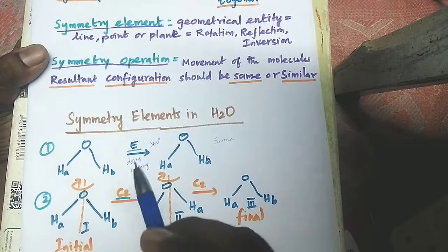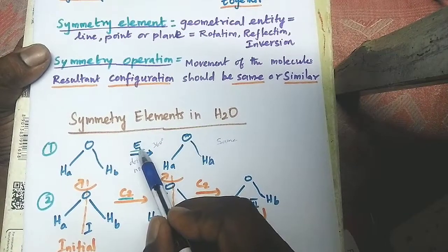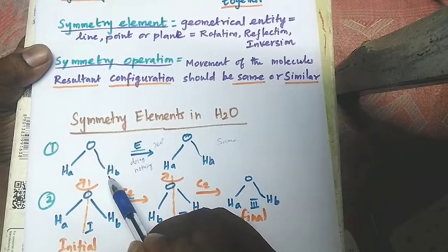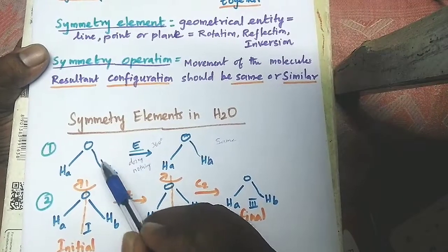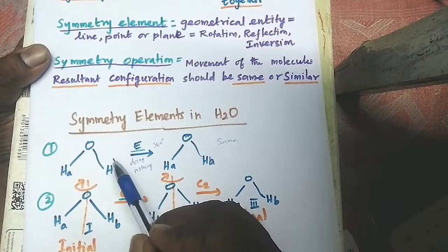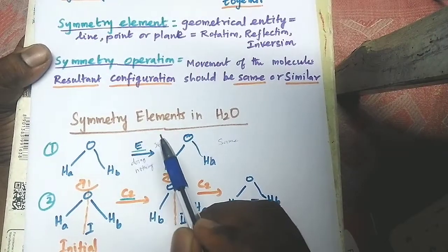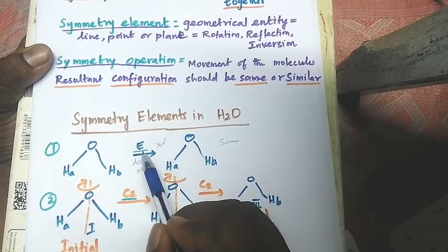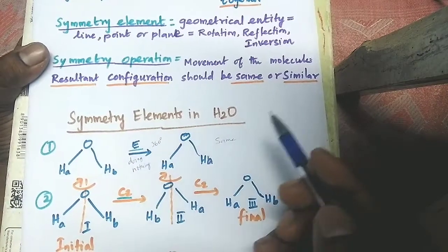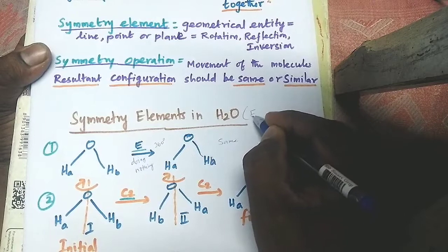We know that when we do nothing to any molecule or structure, it will remain the same as it is. So all molecules in the world possess the symmetry element E. The water molecule possesses the symmetry element E.